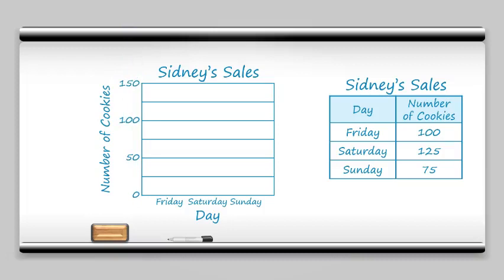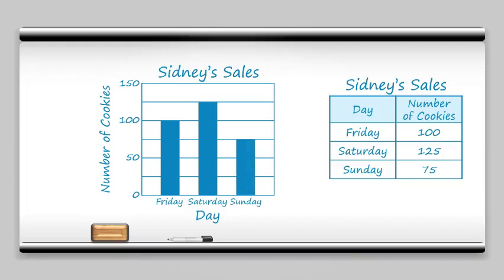So if I want to fill up Friday to 100, that's easy. Then if I want to fill Saturday to 125, well, 125 is halfway between 100 and 150. And then lastly, on Sunday I have 75, which is just three groups of 25, so I can raise my bar up three lines. And there you have your bar graph.